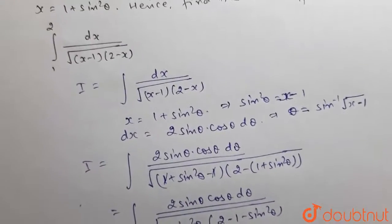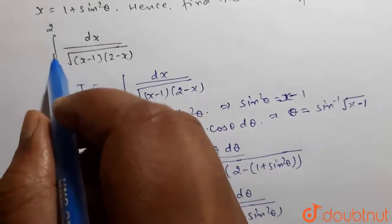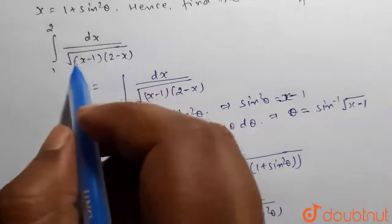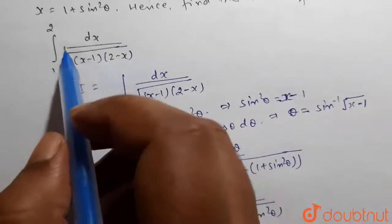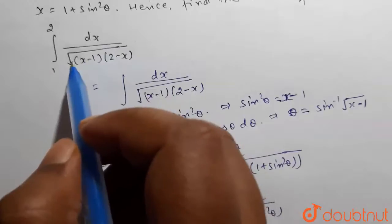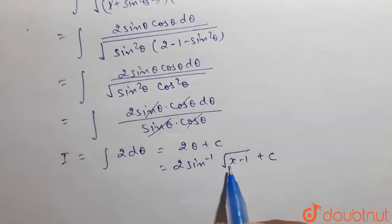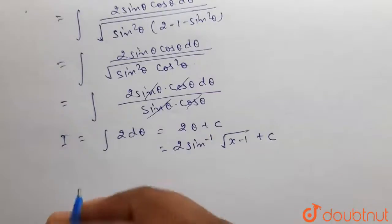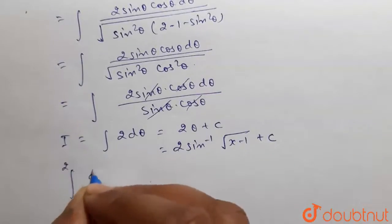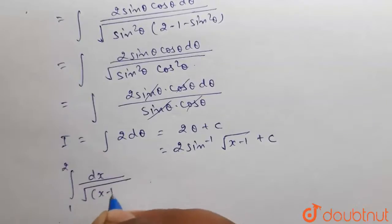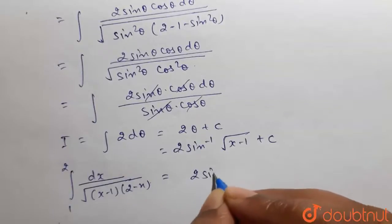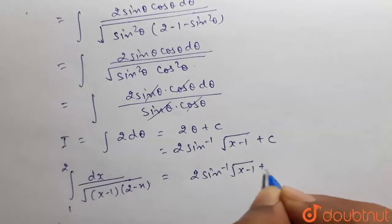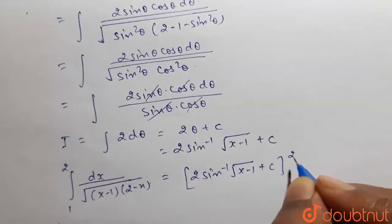Now, we have to find the definite integral, that is integration from 1 to 2 of dx divided by under root of (x minus 1) into (2 minus x). We have already found the value of the integration, which is equal to 2 sin inverse under root (x minus 1) plus C. So, the value of the definite integral with limits from 1 to 2 will be 2 sin inverse under root (x minus 1) plus C, evaluated from 1 to 2.